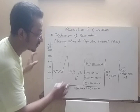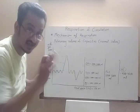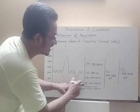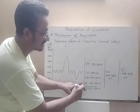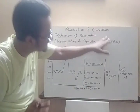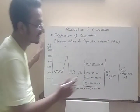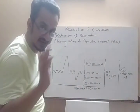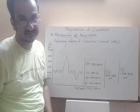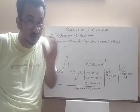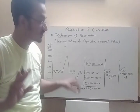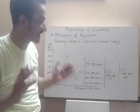The residual volume of about 1000 ml cannot be exchanged at all — it always remains in the lungs. If we add the residual volume and dead space to the vital capacity, the total comes to 5200 to 5800 ml. This is called the total lung capacity — the complete capacity of the lungs. Even though this gas is not all exchangeable, it is still present in the lungs and is included in the total lung capacity.